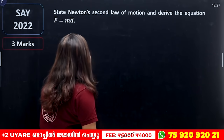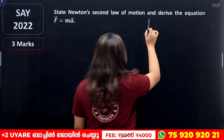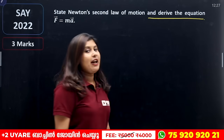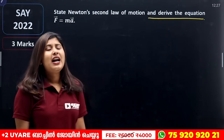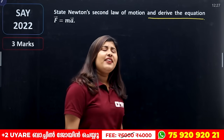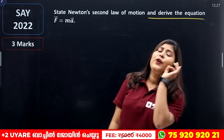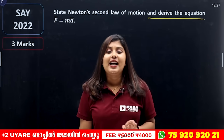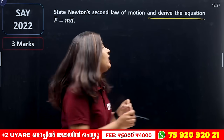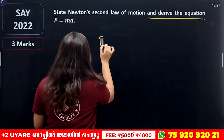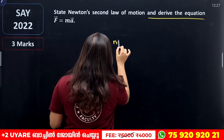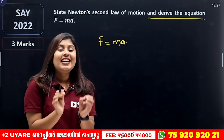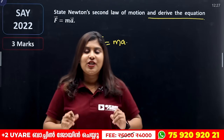State Newton's second law of motion and derive the equation F = ma. This is very important. F is equal to ma — equation derivation. This is a very easy derivation.